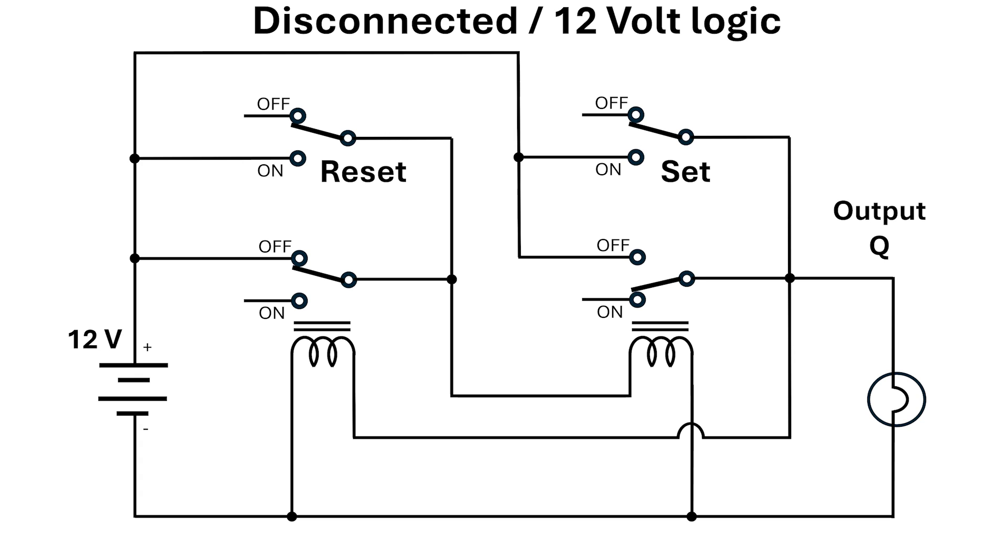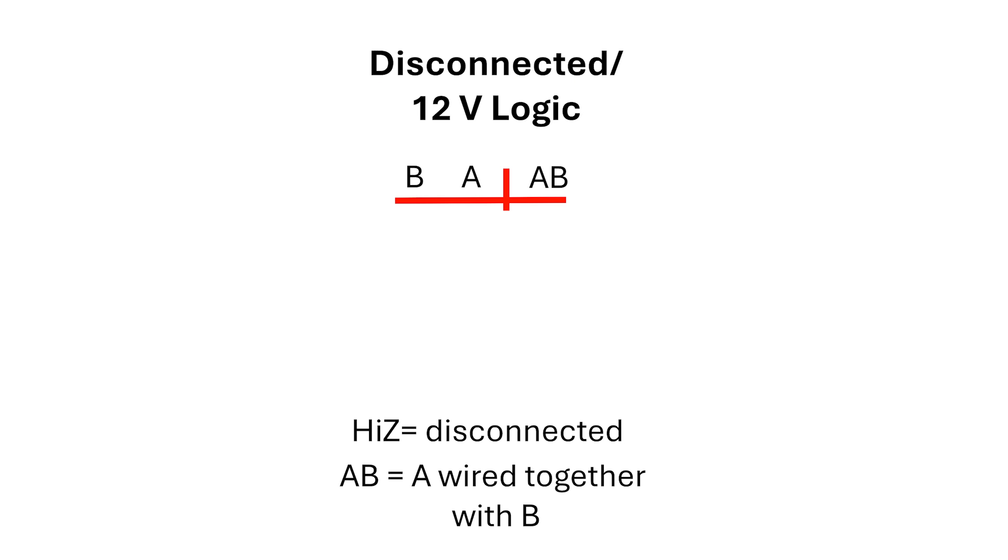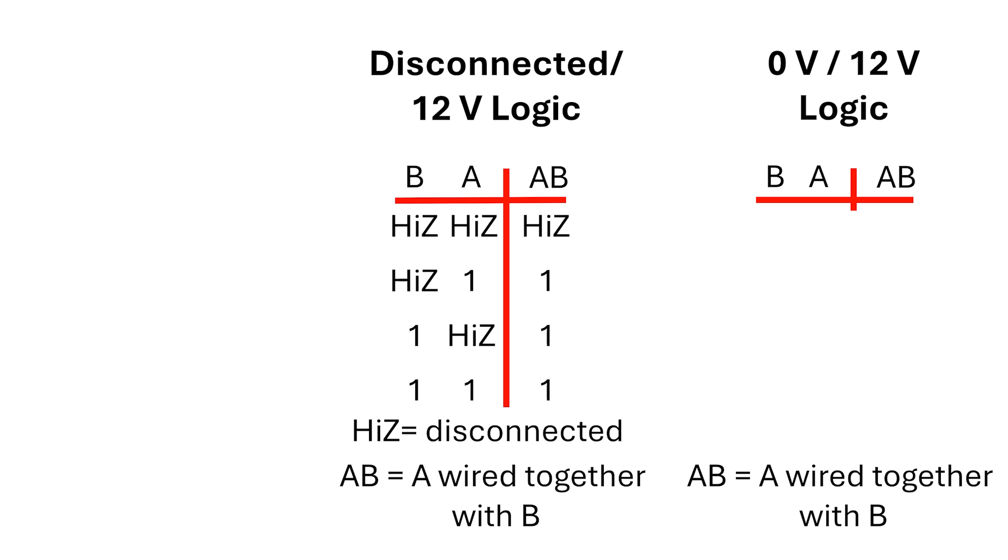Let's call each switch outputs A and B. We can look at the truth tables for when A and B are wired together. In disconnected logic, it means when both A and B are disconnected, then the combination is disconnected. If A or B or both are at 12 volts, then the combination will be 12 volts.